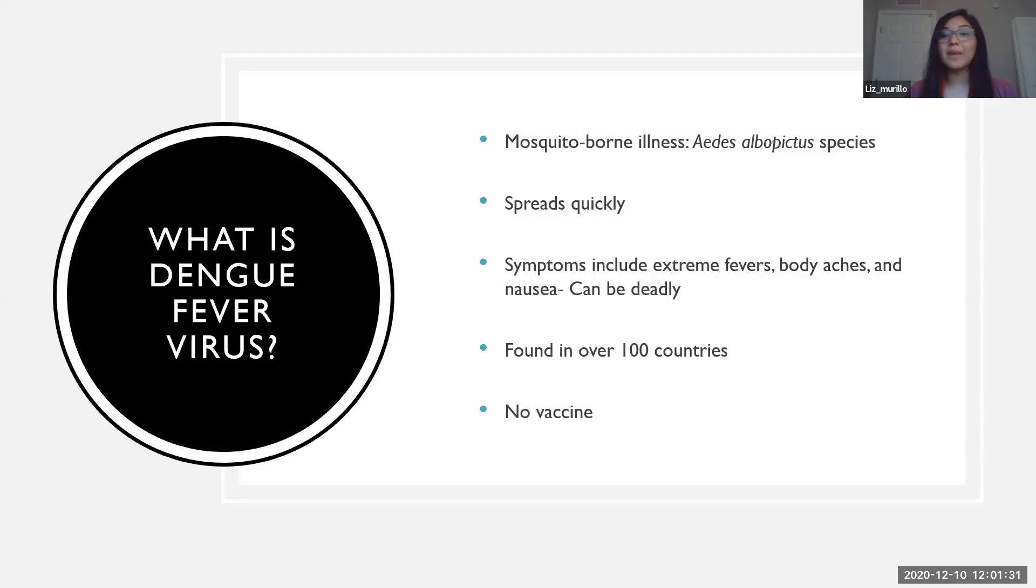Just a quick background on what the dengue fever virus is. It is a mosquito-borne illness, specifically from the Aedes albopictus species. It spreads rather quickly because once an infected mosquito bites a person, it then transmits part of that virus into them. As we all know, mosquitoes don't just die once they bite someone. They go around and bite multiple people, thus spreading the virus quicker.